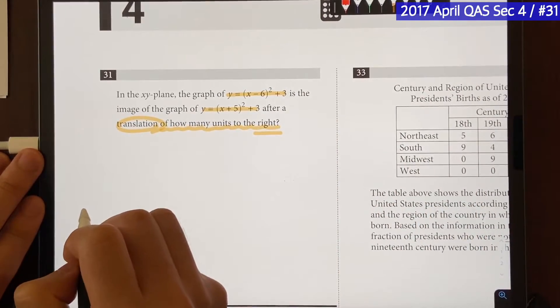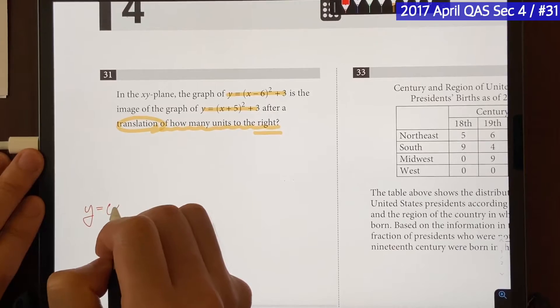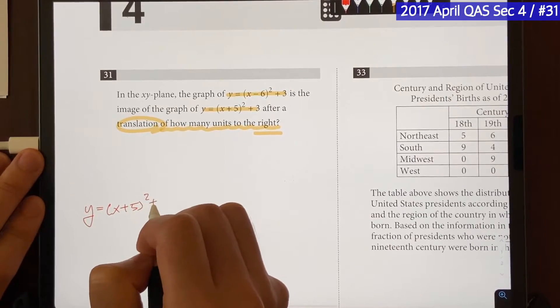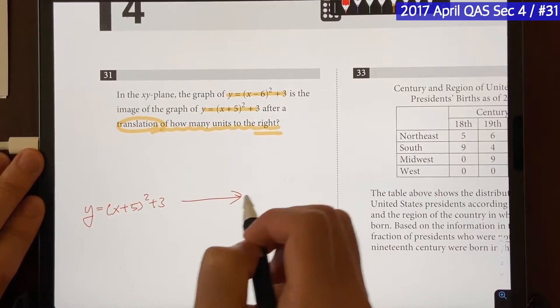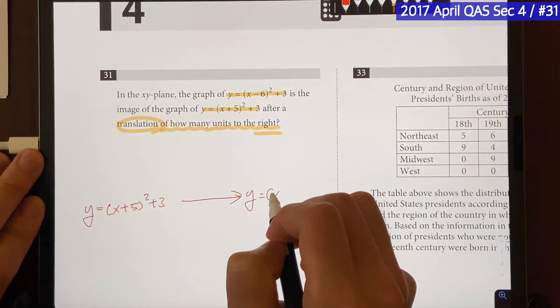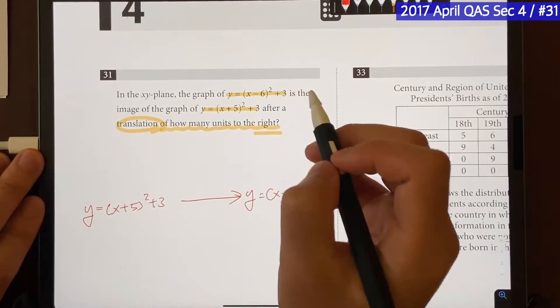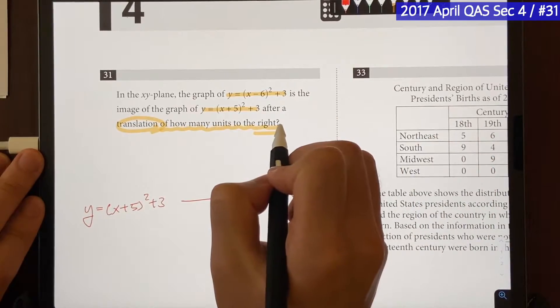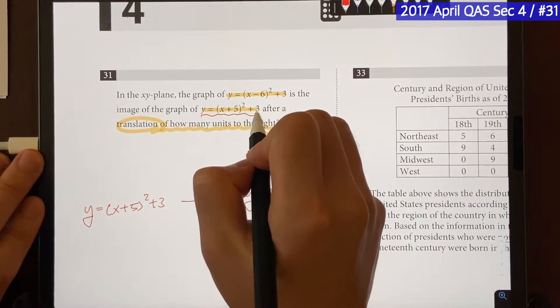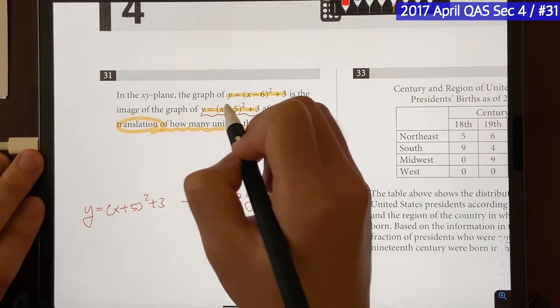So, if you look at this equation, we have the first one is going to be y equals parentheses x plus 5 square plus 3. It went from this to y equals parentheses x minus 6 square plus 3. And the question is asking, how many units to the right do we have to shift this equation in order for us to end up with this equation?